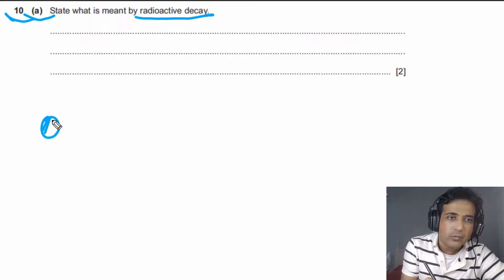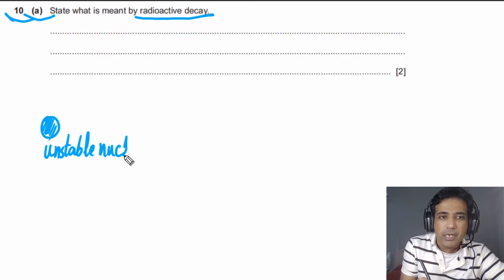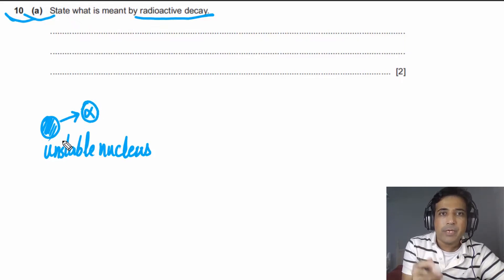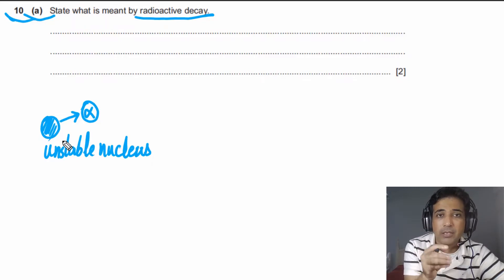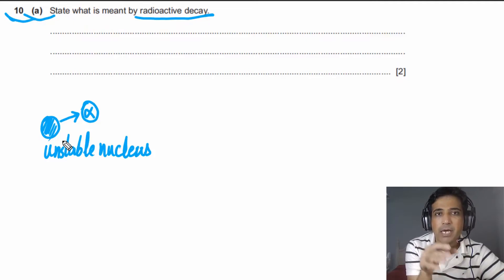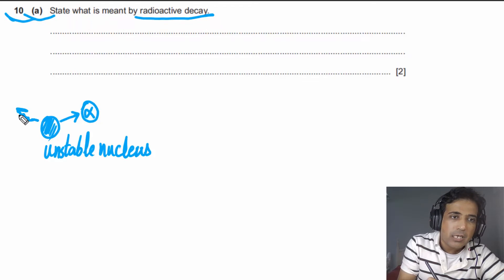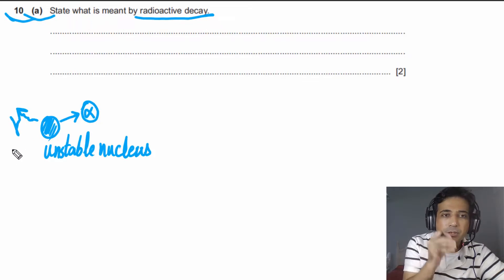Let's understand this with a simple example. Imagine we have an unstable nucleus that will try to become stable. To become stable, it has to emit nuclear radiations. Let's say this is an alpha emitter — it will emit alpha particles to become stable, and it will also emit gamma radiations. Gamma radiations are emitted in alpha decay and also in beta decay. In questions, they often ask where the extra energy has gone — simply say it has been emitted as gamma radiations. This emission from an unstable nucleus is called radioactive decay.